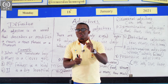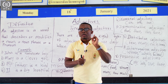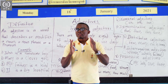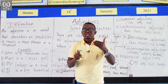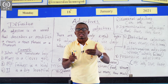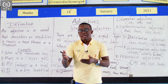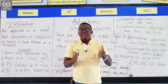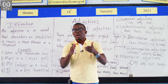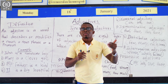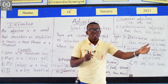If you remember correctly, in the previous lesson, we said that a noun is the name of a person, an animal, a place, or a thing. And a pronoun is a word that replaces a noun in a sentence.